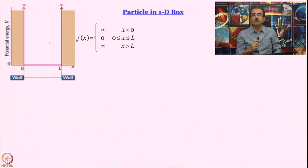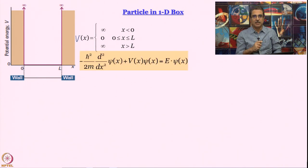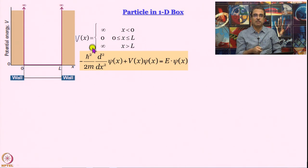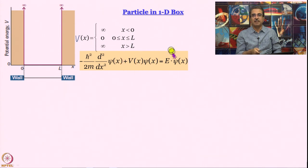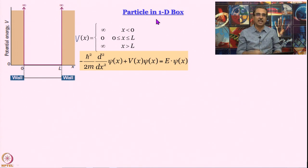Let us see what the Schrödinger equation will be for the particle inside and outside the box. This is the most general Schrödinger equation for a particle in one dimension: the first term, −ℏ²/2m · d²ψ/dx², tells us about kinetic energy, and the second term V(x)·ψ(x) gives information about potential energy. The right-hand side is the total energy E multiplied by ψ(x). This is an eigenvalue equation.